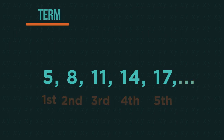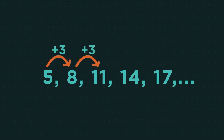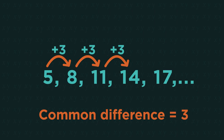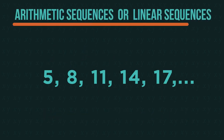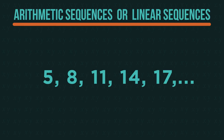This sequence is very easy to carry on. We can easily spot it's going up by three each time. Because it's plus three every time, we say it has a common difference of three. Sequences that have a common difference — the same difference every time — are called arithmetic sequences or linear sequences.